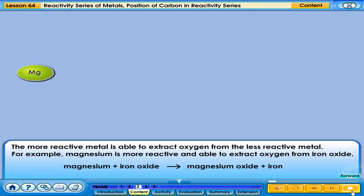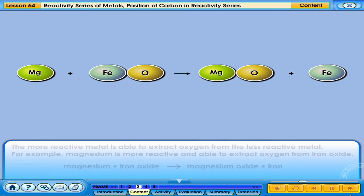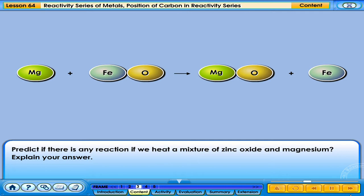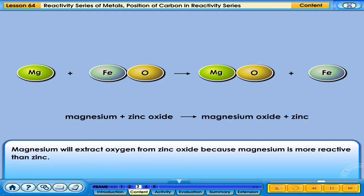The more reactive metal is able to extract oxygen from the less reactive metal oxide. For example, magnesium is more reactive and able to extract oxygen from iron oxide. Magnesium reacts with iron oxide to form magnesium oxide and iron. Magnesium will also extract oxygen from zinc oxide because magnesium is more reactive than zinc.